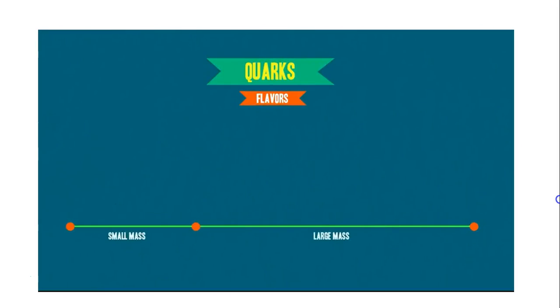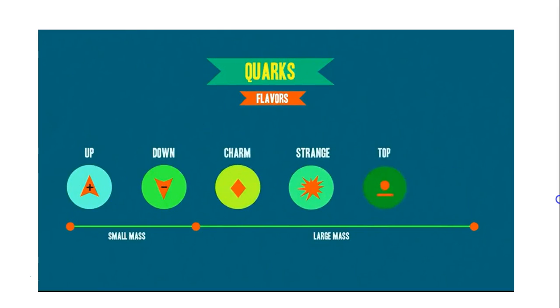And there are six flavors of quarks. Lemon lime, root beer, hazelnut, sorry. Seriously, you've heard of these: up, down, strange, charm, top, and bottom.